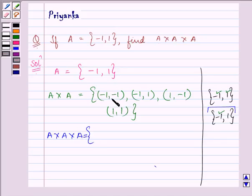The first element of set A × A is (-1, -1). It will be paired with the first element of set A. And now, the ordered triplet will be (-1, -1, -1). Then, (-1, -1, 1). That means, we are pairing the first element of set A × A with each element of A.